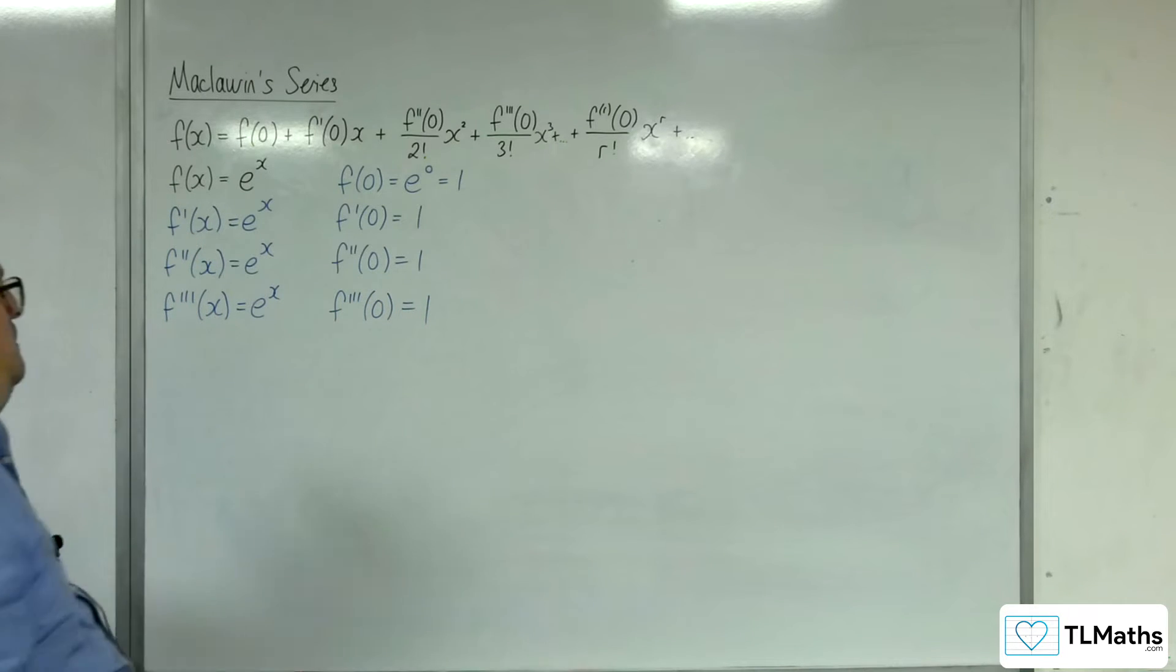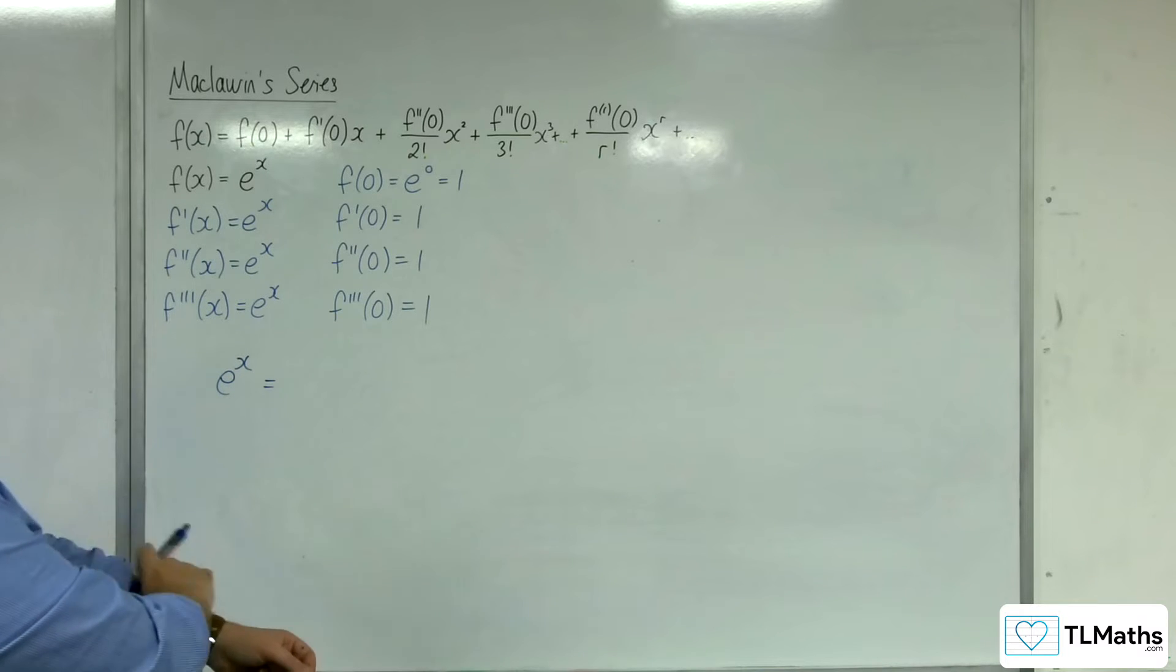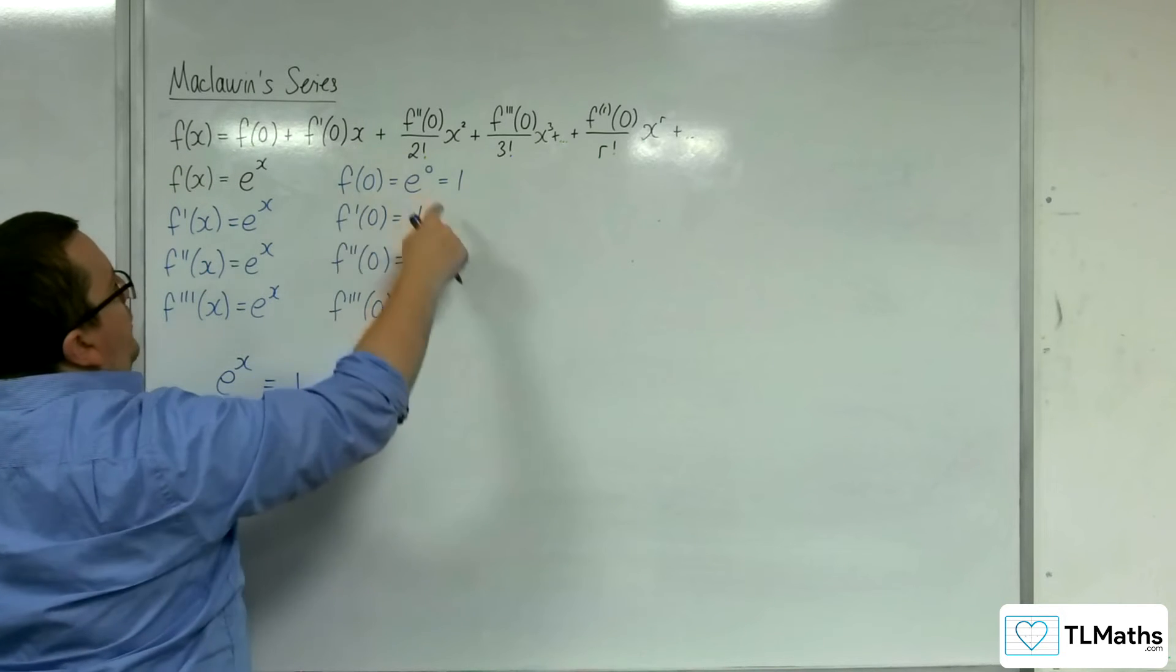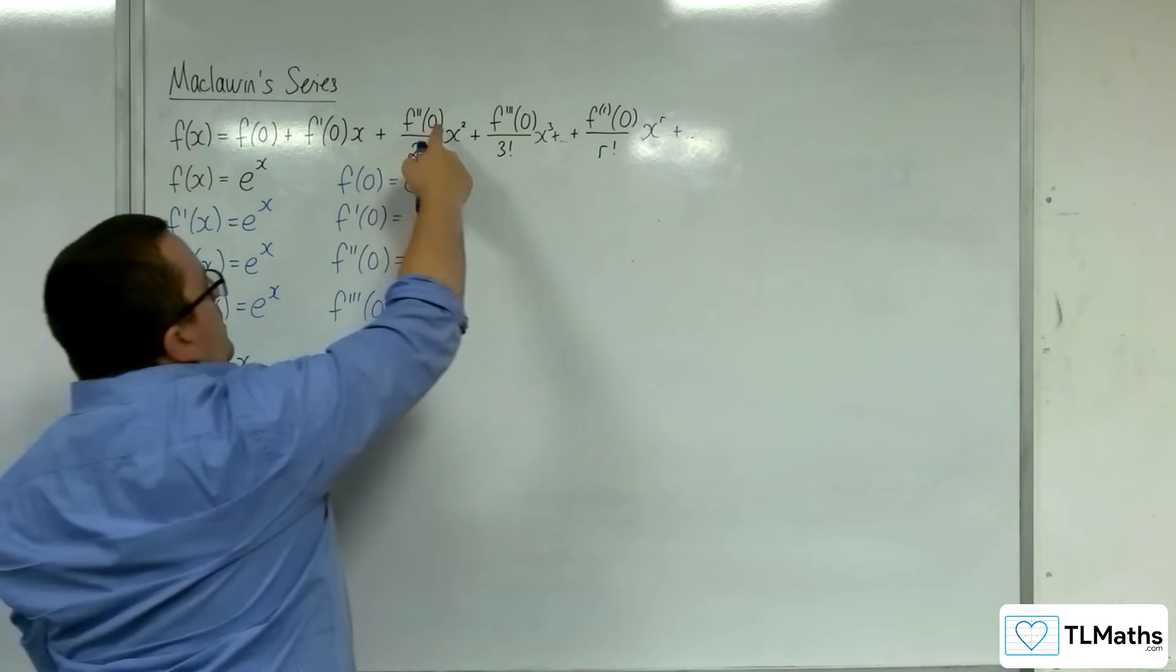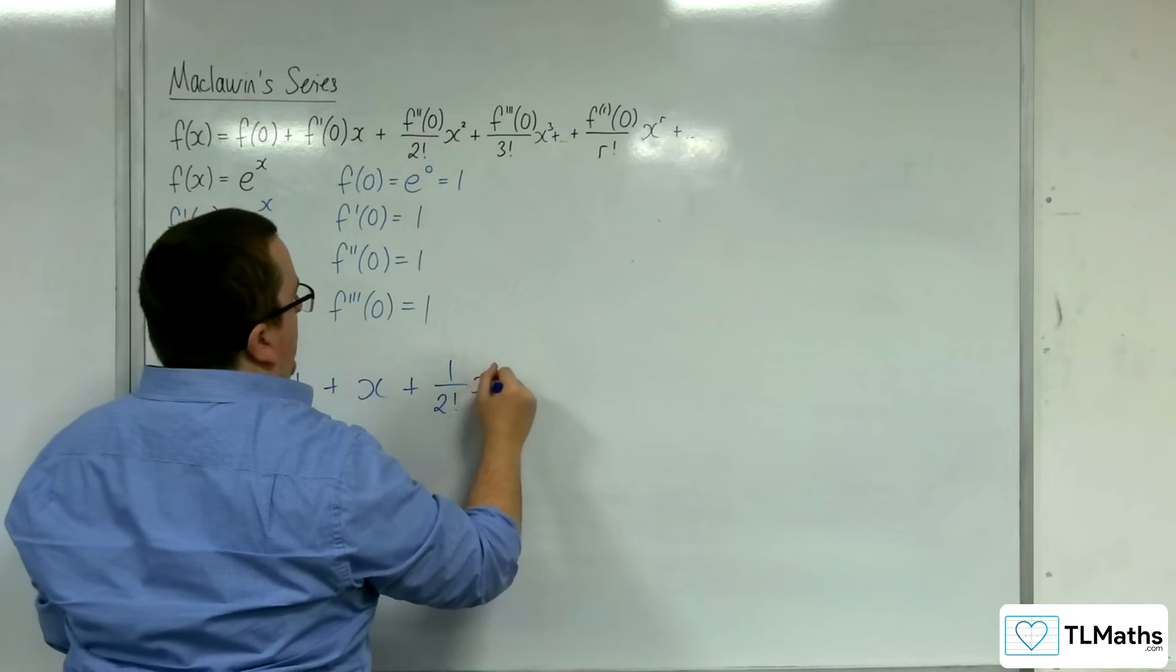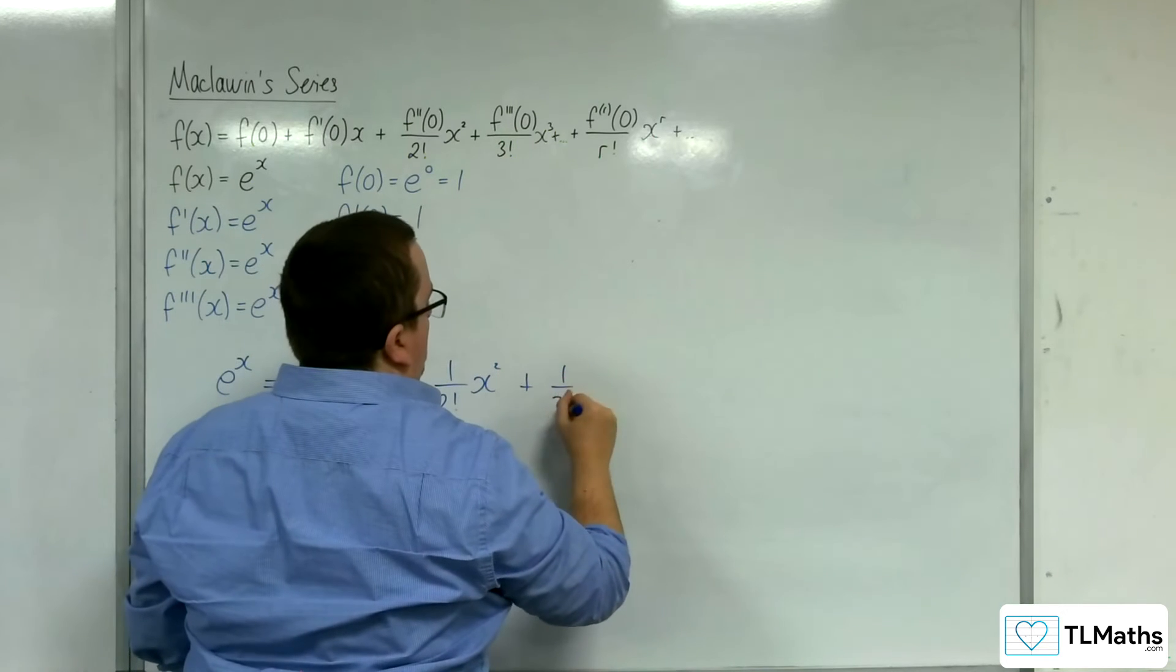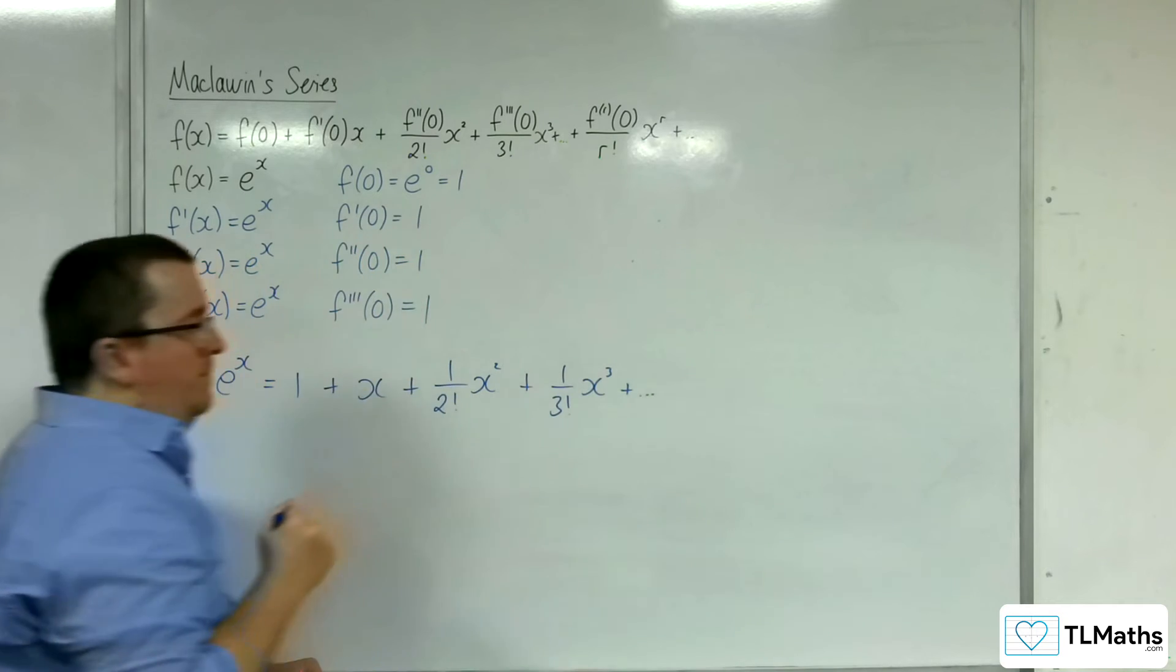So e to the x is going to be equal to f of 0, which is 1, plus f prime of 0 times x, then f double prime of 0 over 2 factorial, so 1 over 2 factorial x squared, plus 1 over 3 factorial x cubed, etc.